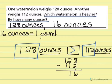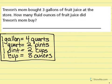Let's look at one more. Trevon's mom bought 3 gallons of fruit juice at the store. How many fluid ounces of fruit juice did Trevon's mom buy? So I know she bought 3 gallons.